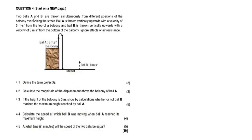Now we have question four. It says two balls, A and B, are thrown simultaneously from different positions of a balcony overlooking the street. Ball A is thrown vertically upward with a velocity of 5 meters per second from the top of the balcony. Ball B is thrown vertically upward with a velocity of 8 meters per second from the bottom of the balcony. Ignore the effect of air resistance.